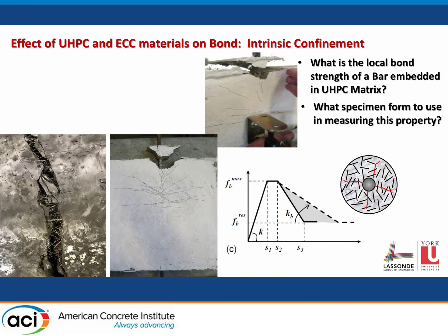Preliminary tests have shown that when reinforcement is embedded in UHPC material, you can develop very high stresses, even with very small cover — about one bar diameter. You can fully develop bar capacity without obtaining splitting failures until very large levels of strain. We believe this is because fibers intersecting the crack path provide hoop resistance, reflected by increased fracture energy in the bond slip law, shown by the gray area in the slide.